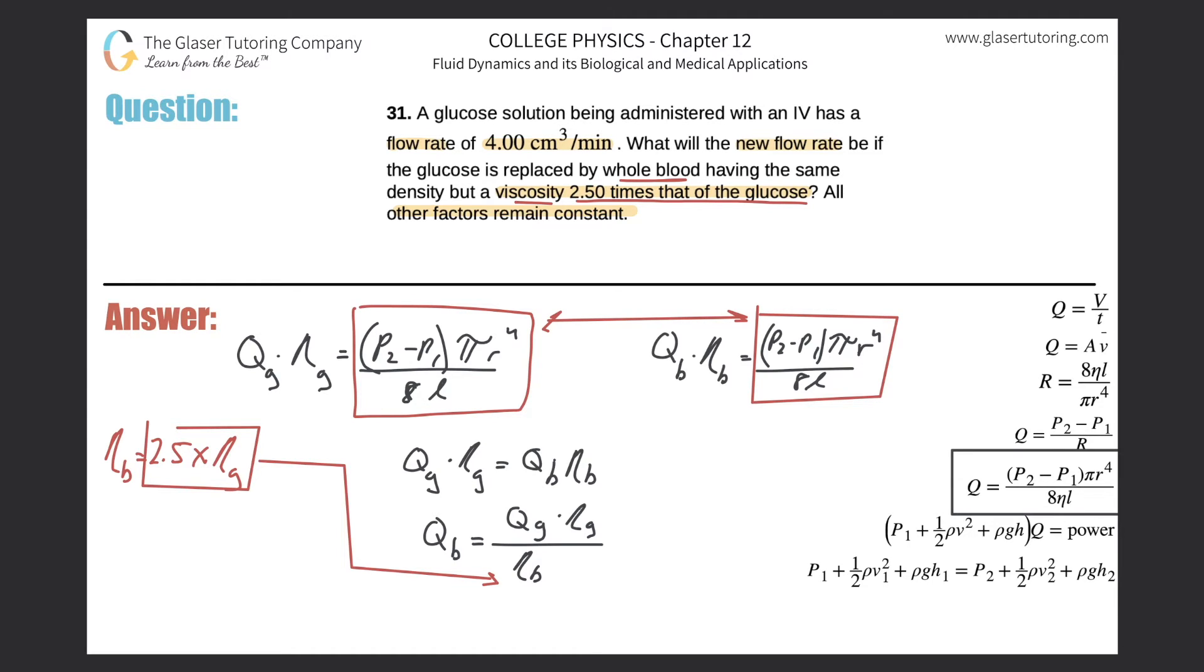Now when we do that what happens? Well we have this equation now. We have q sub b times the viscosity of glucose all divided then by 2.5 times that of the viscosity of glucose. Oh my goodness look. Goodbye.